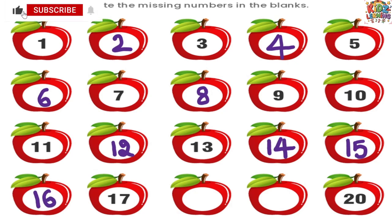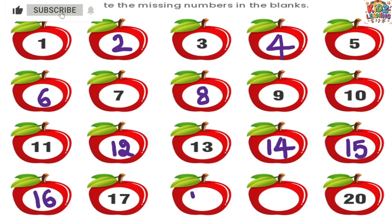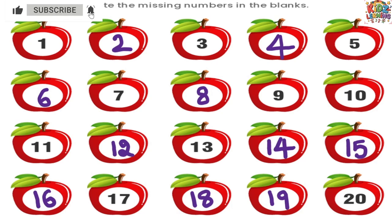Let's start the last row again. What comes before 17? Let's count back: 17, 16. So the first apple is 16. After 17 comes 18. Let's write 18 in the next apple. And after 18 comes 19. Let's put 19 in the last blank apple. Finally, we have 20. We did it! We filled in all the missing numbers. Thanks for helping me count from 1 to 20. See you next time.